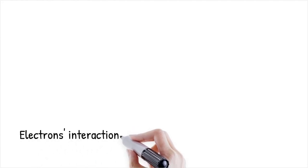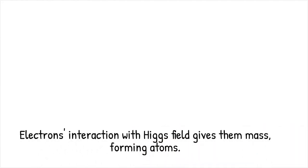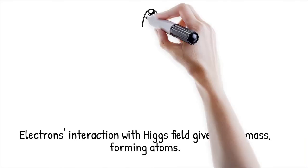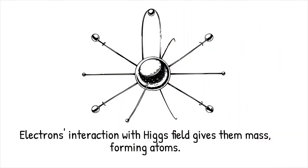Electrons, key building blocks of atoms, interact moderately with the Higgs field, giving them a small but important mass. This mass allows electrons to stay bound to the positively charged nucleus of an atom, forming stable structures like the atoms of hydrogen, oxygen, and carbon that make up the world around us.